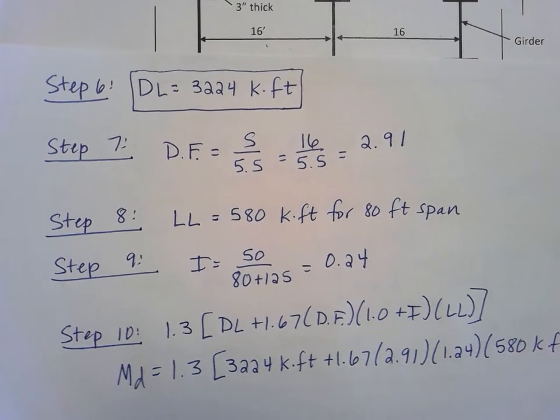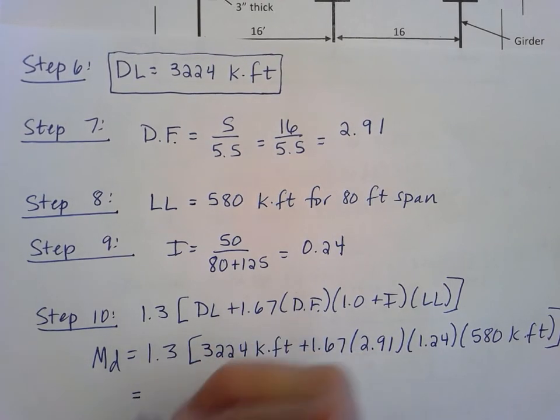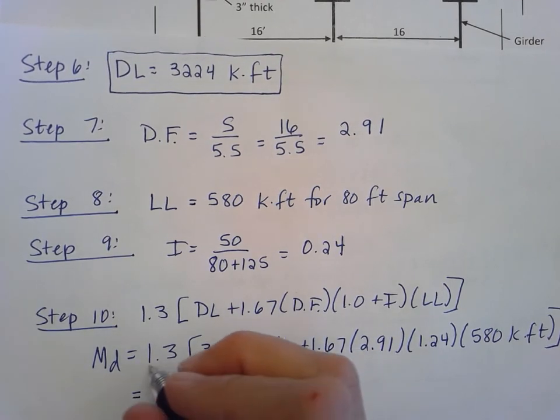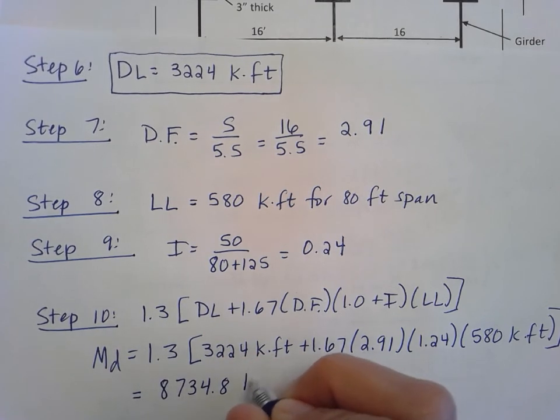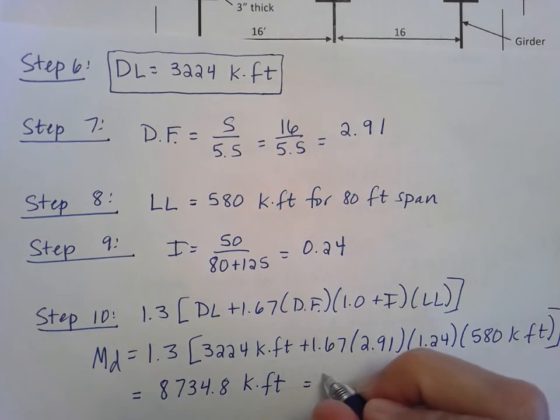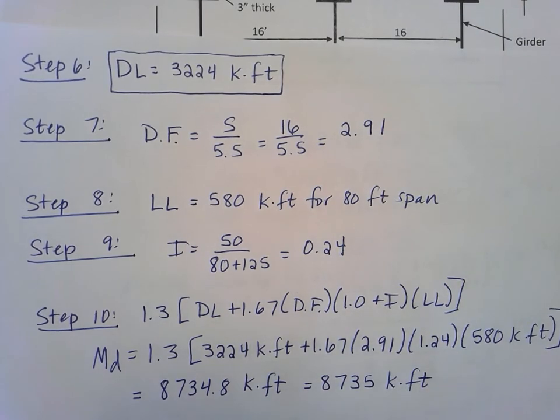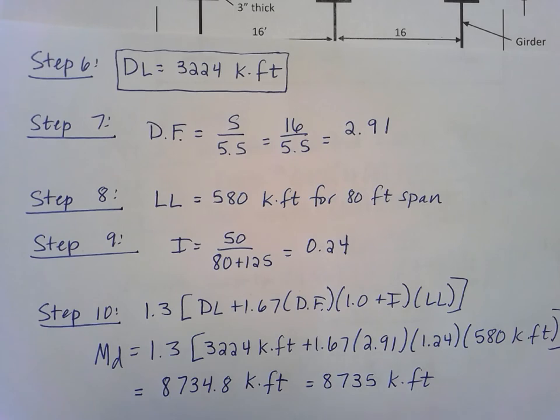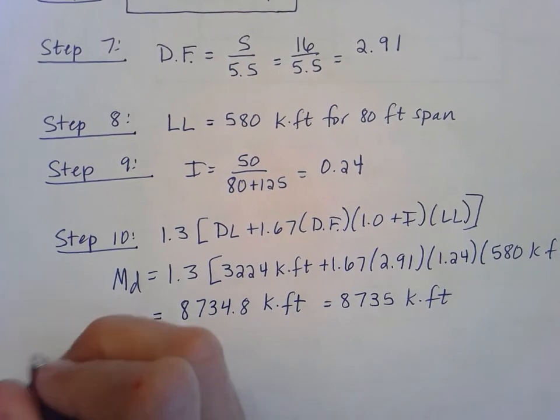Turning through all that math, I wind up with a factored design moment of 8,734.8 kip feet. If you want to go to a whole number here, that's fine: 8735 kip feet. We do lots of things to one decimal place, so if you want to keep it there, that's fine as well. For step 11, we're going to do our compact section checks for the flange and the web for this particular girder.